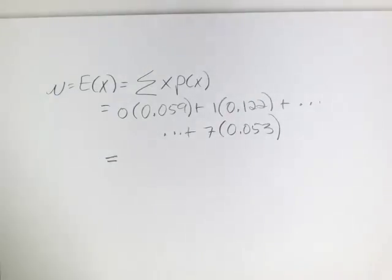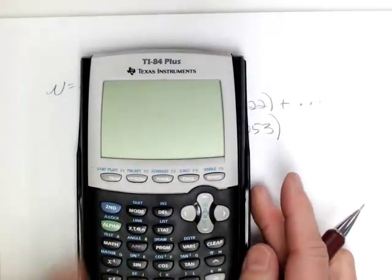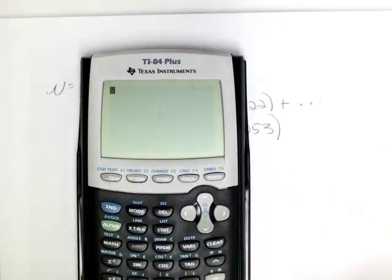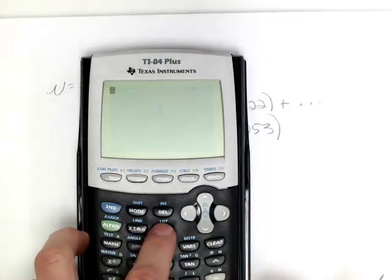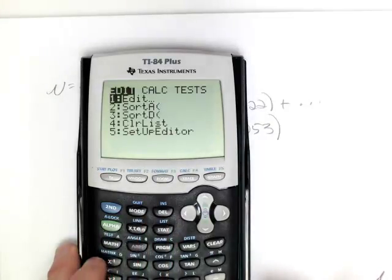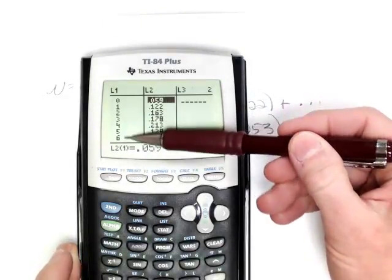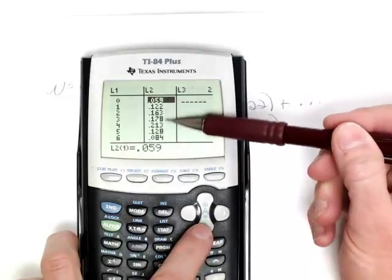To get this in the calculator, what you need to do is first put the information in two lists. You want your x values to be list 1 and your probabilities to be in list 2. So I went ahead and did that previously. I went to stat and then edit. You'll see that x takes on 0 through 7 with their corresponding probabilities.